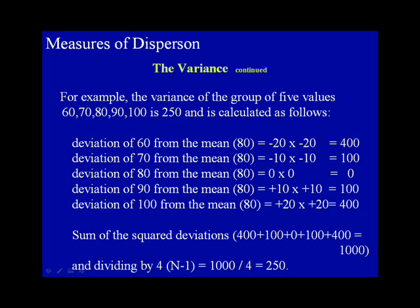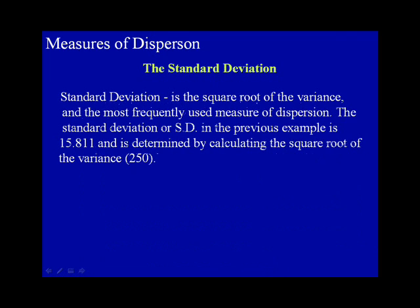The standard deviation is the square root of the variance and the most frequently used measure of dispersion. The standard deviation, or SD, in the previous example is 15.811 and is determined by calculating the square root of the variance.